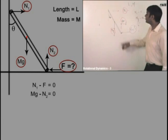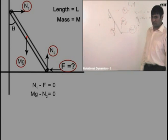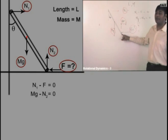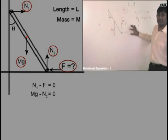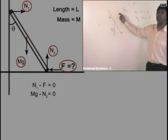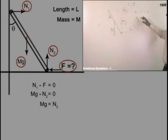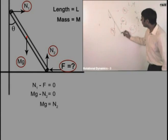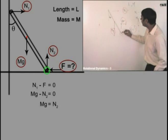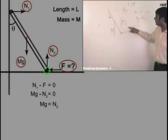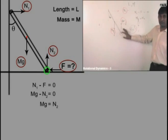Let's write the equations. Net force in horizontal direction is zero: the only horizontal forces are N1 and F, so N1 minus F equals zero. Net force in vertical direction is zero: Mg downward minus N2 equals zero, so N2 equals Mg. Now for the torque equation - should I choose the center of mass or the lowermost point as pivot? Choosing the lowermost point is advantageous because the torques due to F and N2 about that point are both zero, eliminating two unknowns at once. This makes the equation simpler and easier to solve.